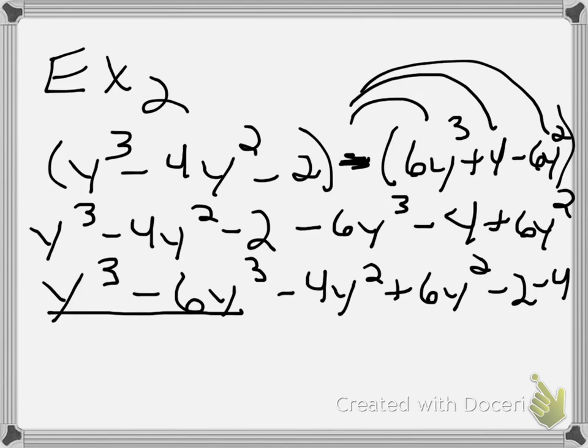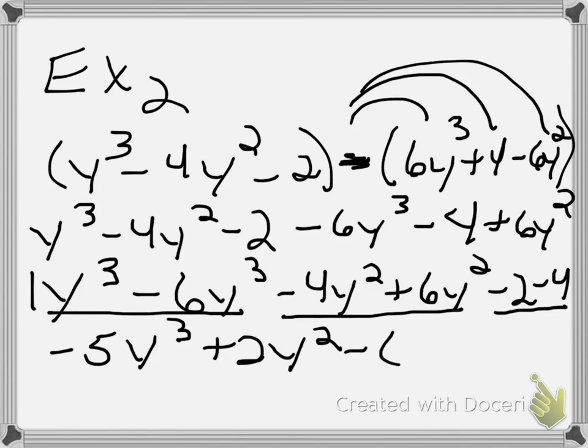Like terms because they are the same variable raised to the same power. And that results in 1 - 6 which is -5y³ + 2y² - 6. Remember you can combine like terms because of the distributive property. They have a common factor. Hope this helps you guys.